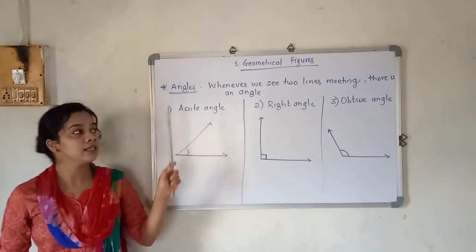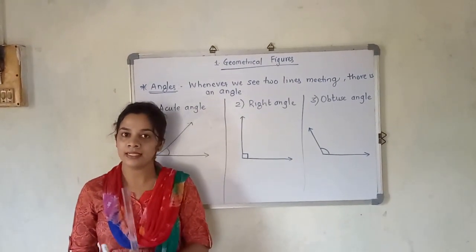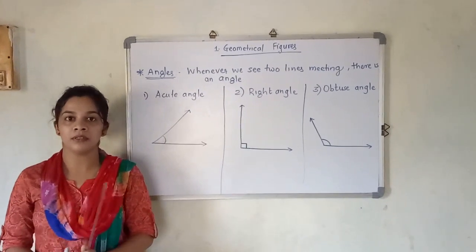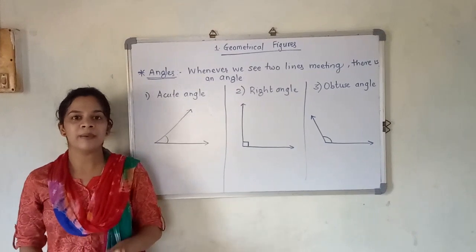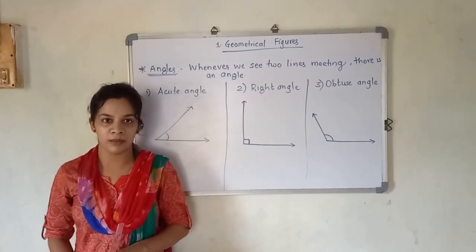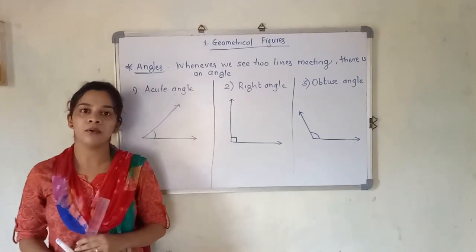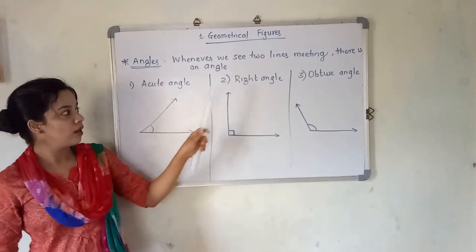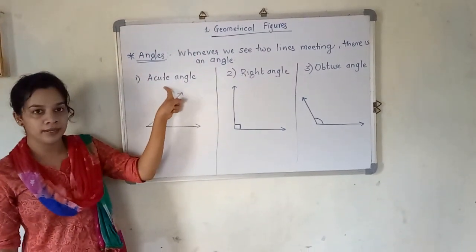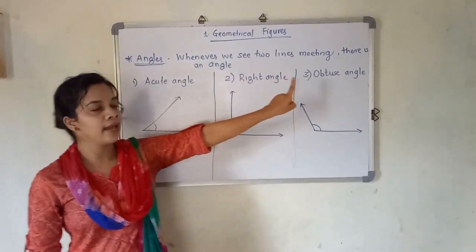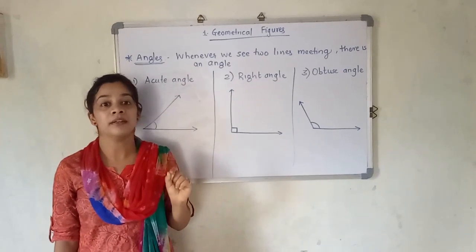The first concept is angles. What are angles? Angles means whenever you see two lines intersecting or two lines meeting each other, whatever thing is formed is said to be an angle. Angles are basically of three main types — there are more types but those will be for higher education. For now, the three types are: acute angle, right angle, and obtuse angle. One thing you should remember: angle is measured in terms of degrees.